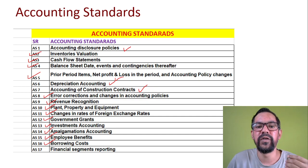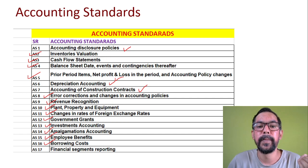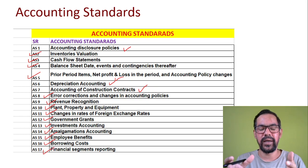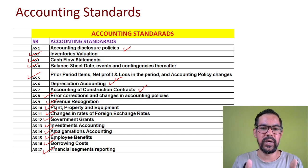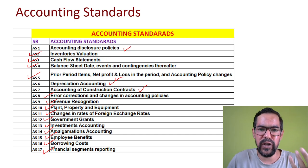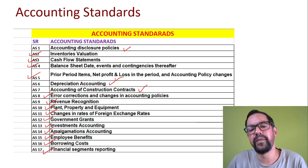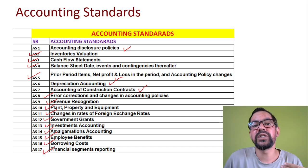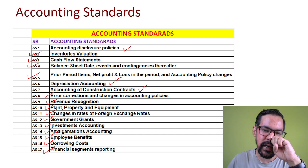Accounting Standard 16 is Borrowing Cost. If a company borrows money from the general public or from institutional lenders, they have to disclose that and at what cost they borrowed. Accounting Standard 17 is Segment Reporting. An organization has different segments, and they have to do segment reporting to evaluate the overall performance of different departments. For example, if a company runs multiple products, segment reporting tells you which products are profit-making and which are loss-making.